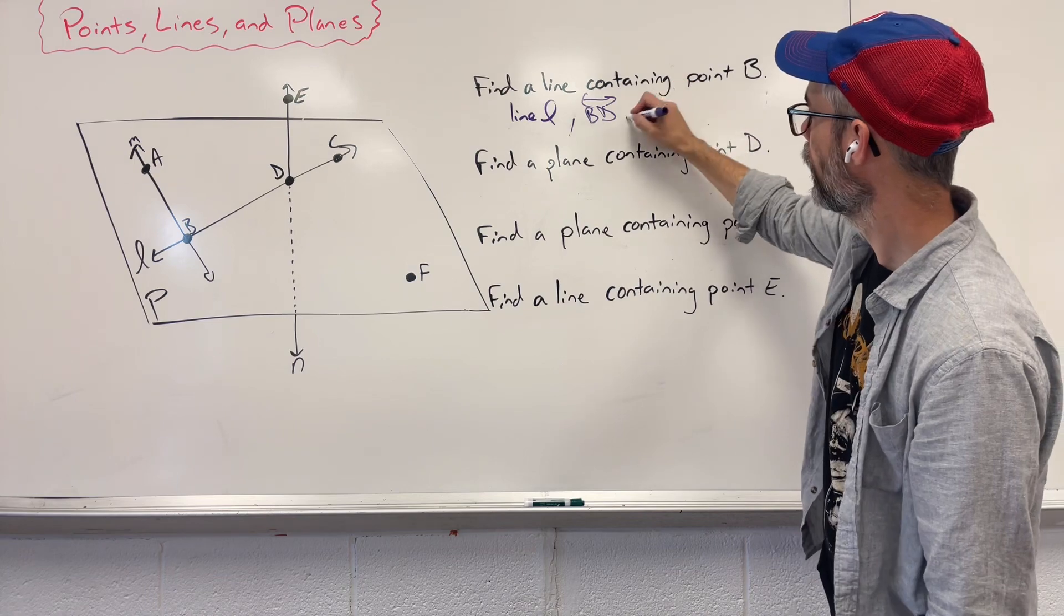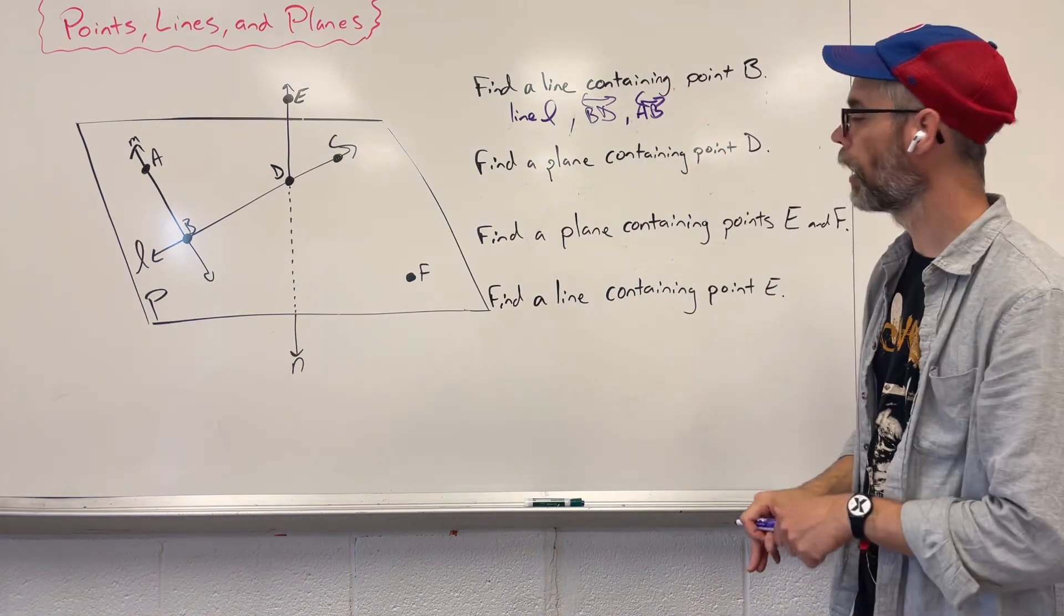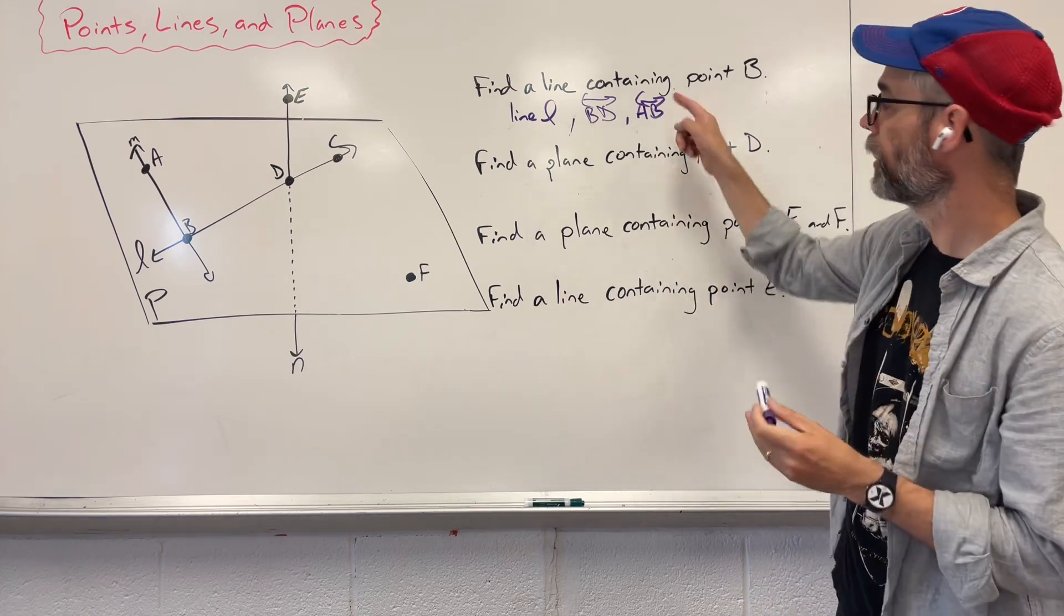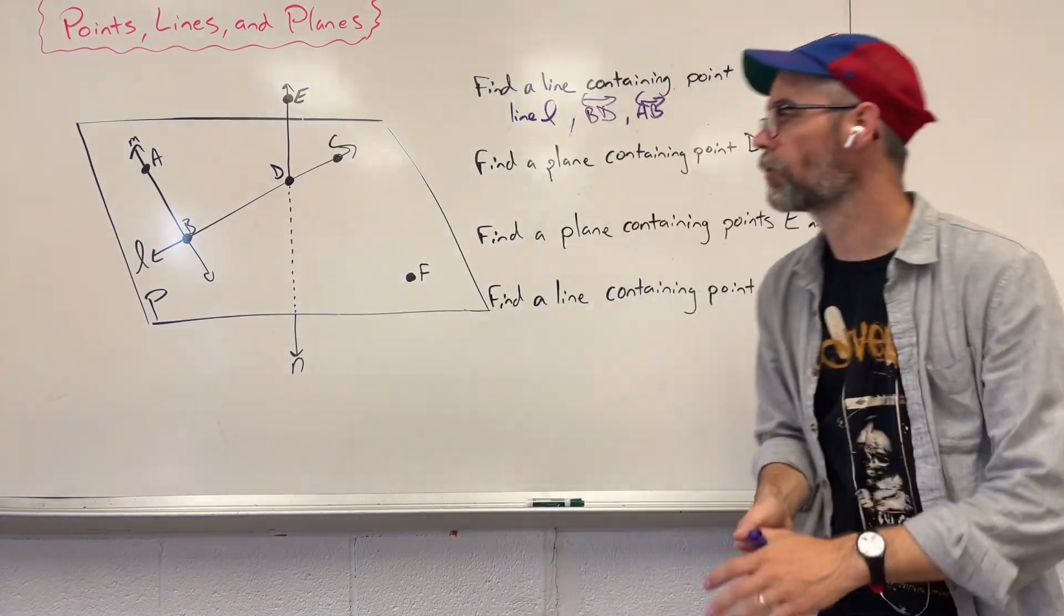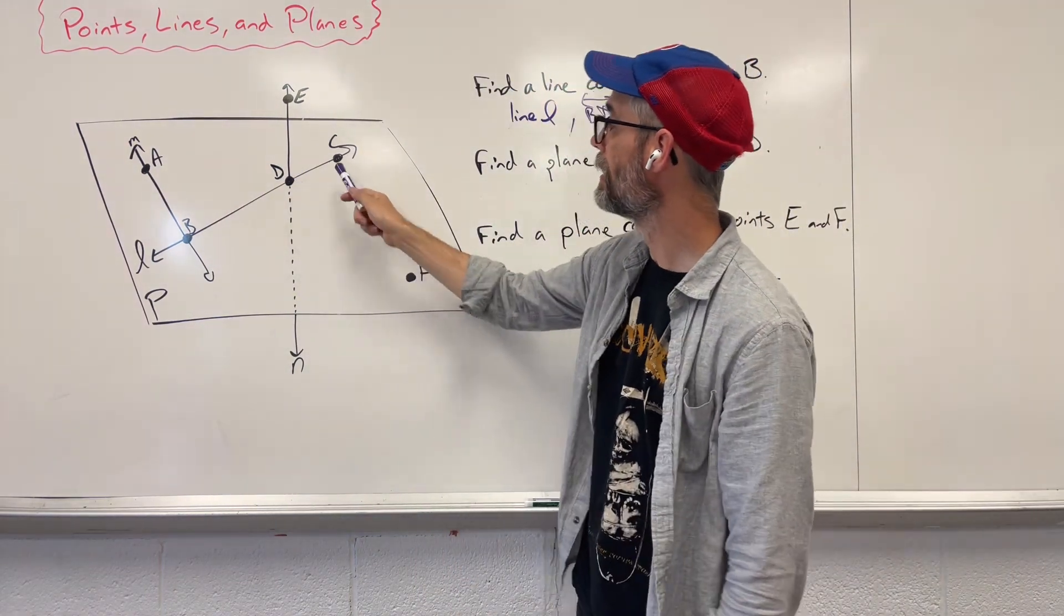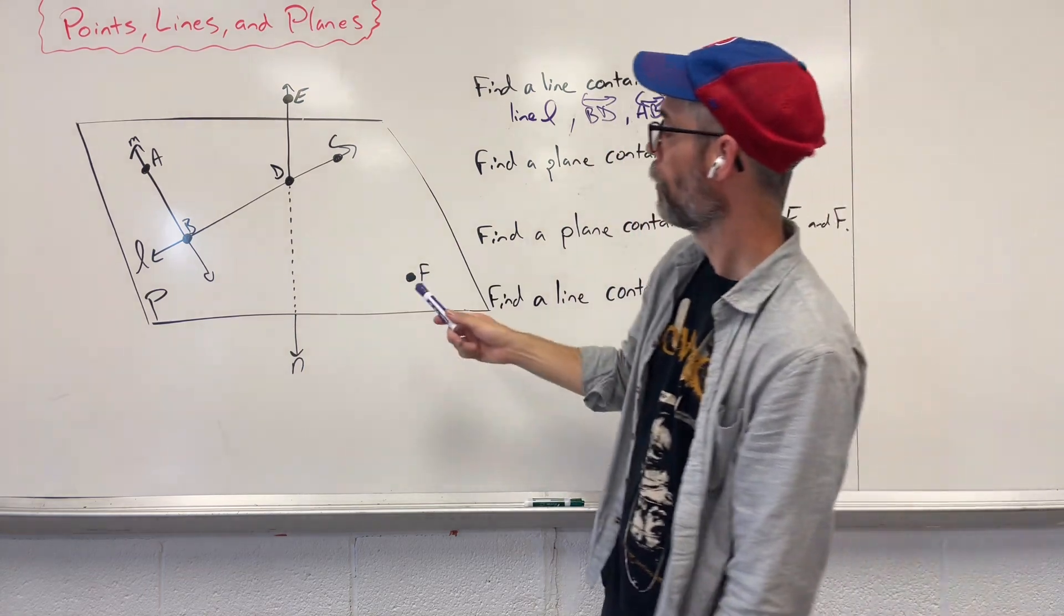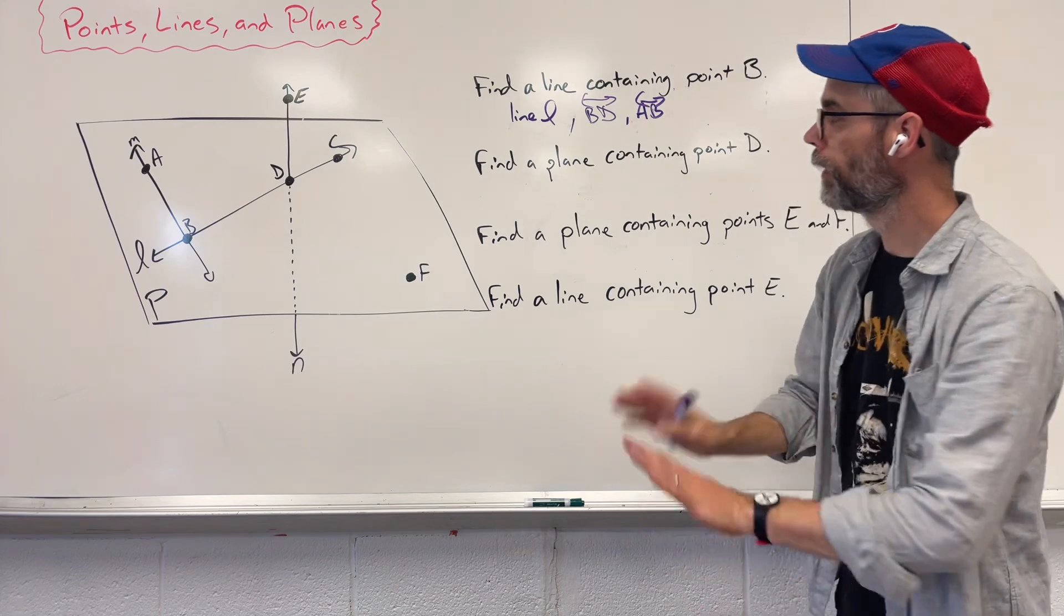I could also say AB with a little arrow with the line arrows up there. What this says is that we have a line and it continues on forever. We have arrows on the end that says it continues on forever. This is not the only ones. We could also say DC with a line on top. We could say BC on there. They all work.